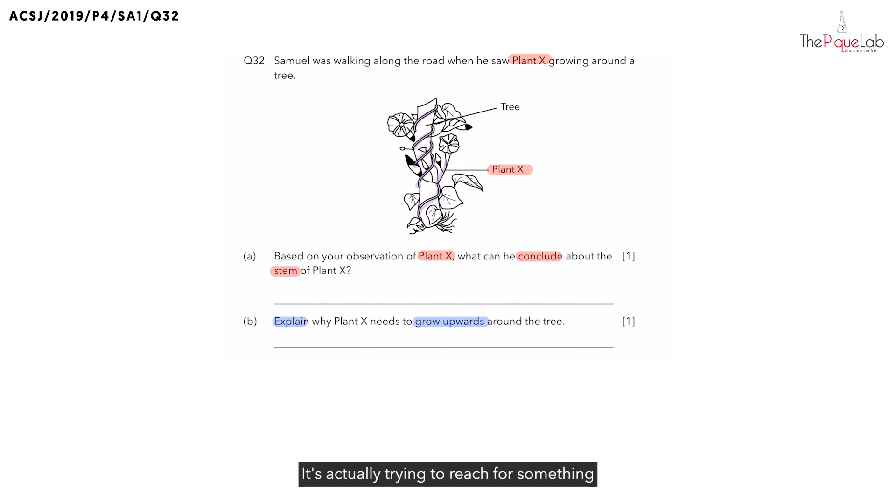It is actually trying to reach for something that's coming from the sky. Now, what do all plants need that comes from the sky? All plants need to trap sunlight. So, when the plant is growing upwards, it is actually trying to get more sunlight. And why do the leaves of the plant need to trap more sunlight for? They need to trap more sunlight for photosynthesis. And we all know photosynthesis is the process to make food. And with that, that's our answer for part B.